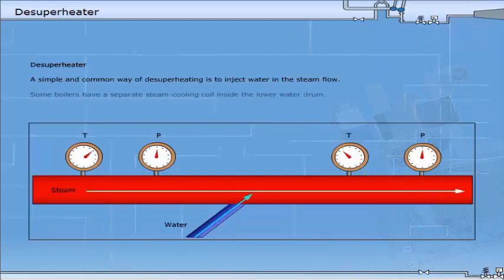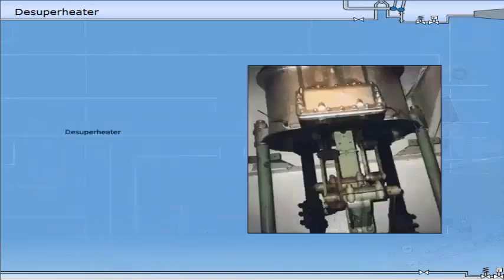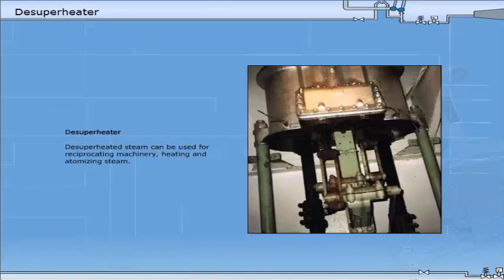Some boilers have a separate steam cooling coil inside the low water drum. De-superheated steam can be used for reciprocating machinery, heating and atomising steam.